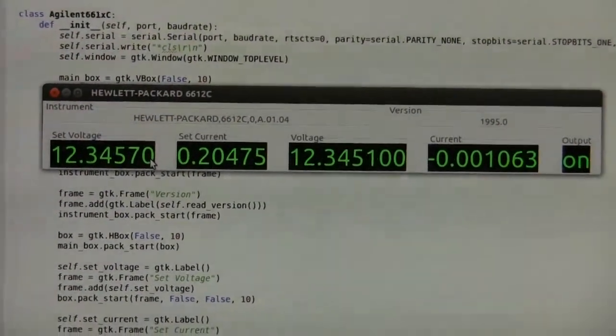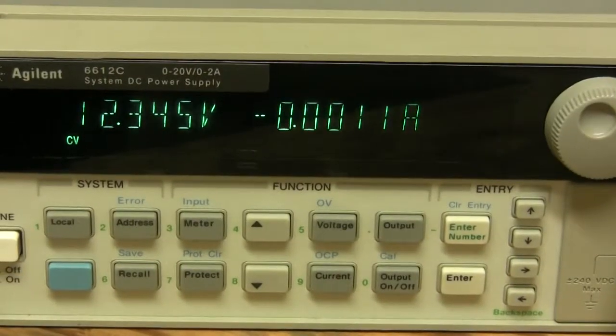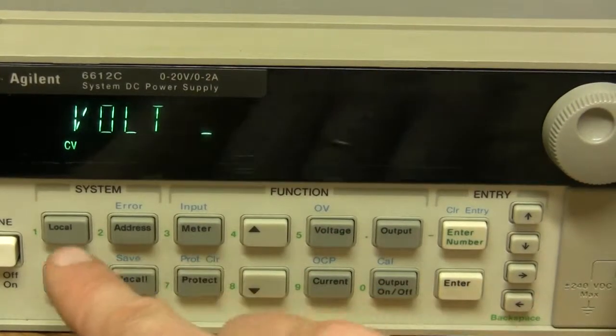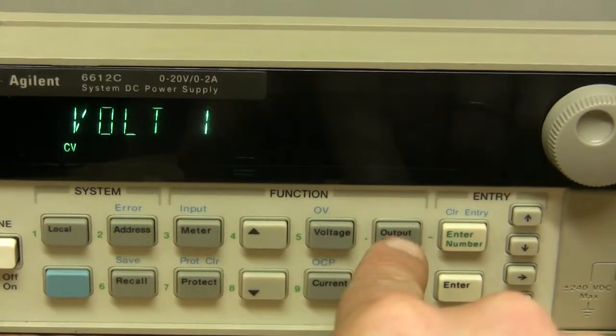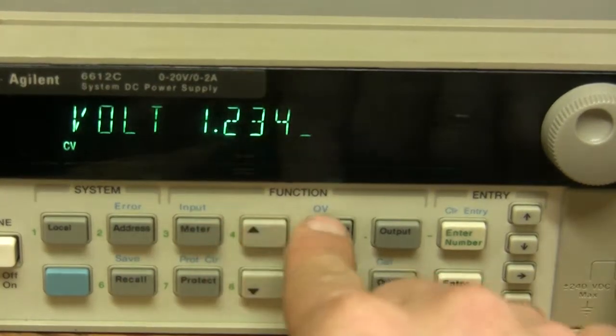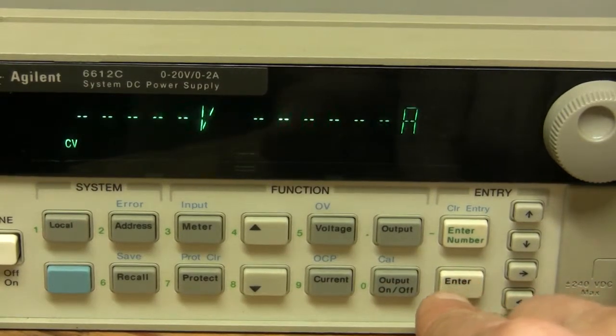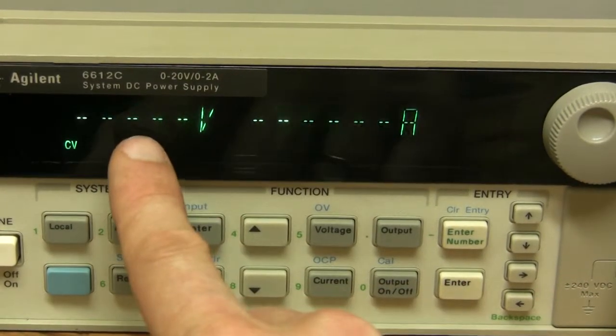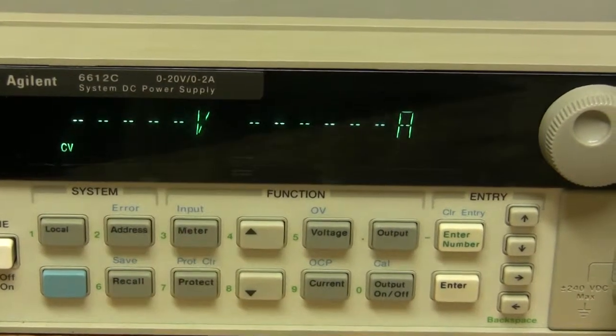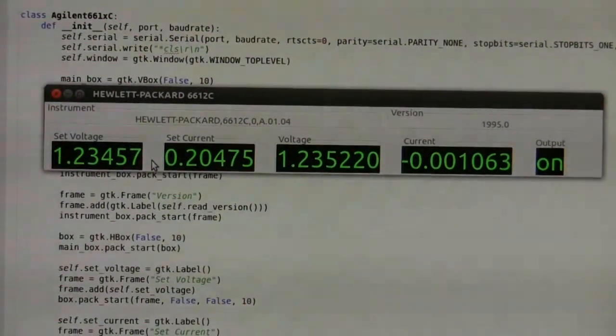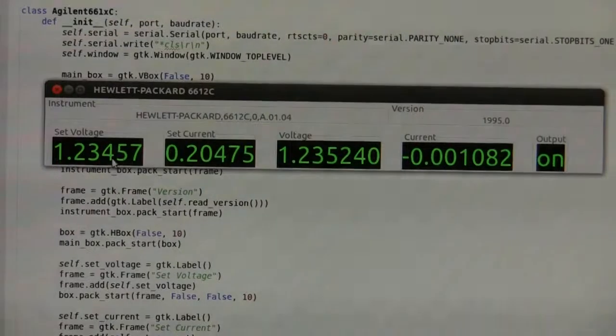Here we see six digits, so that digit 8 after 7, it doesn't show up here. So let's try a lower range. Set voltage - this time I'll try 1.23456789. I press enter and now we see four digits for the voltage on the display. Let's go back to the computer. So we still see six digits here.